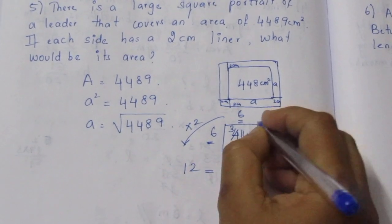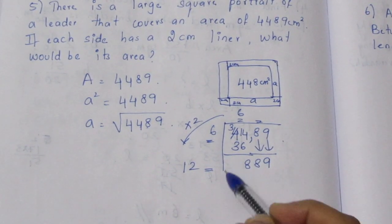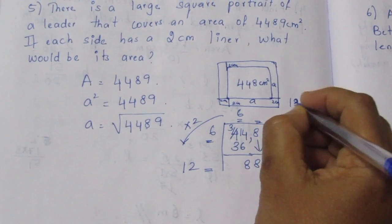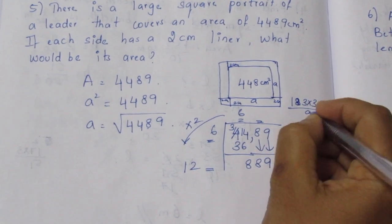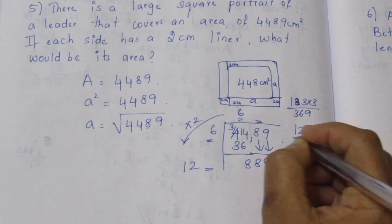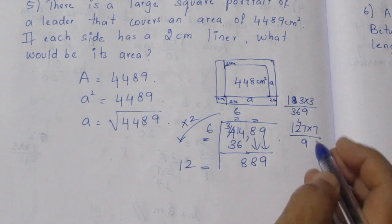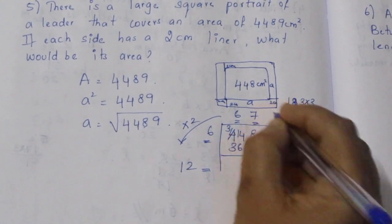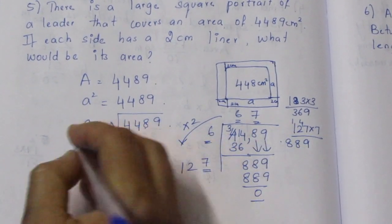Continuing the square root: 6 times 2 gives 12 items. We try 7 — 7 times 7 are 49. We check: 127 times 7 are 889. Computing: 3 times 3 are 9, 3 times 2 are 6, 3 times 1 are 3. Then 7 times 7 are 49, 7 times 2 are 14, 7 times 1 are 7. We get 67 as the result — the square root of 4489 is 67.